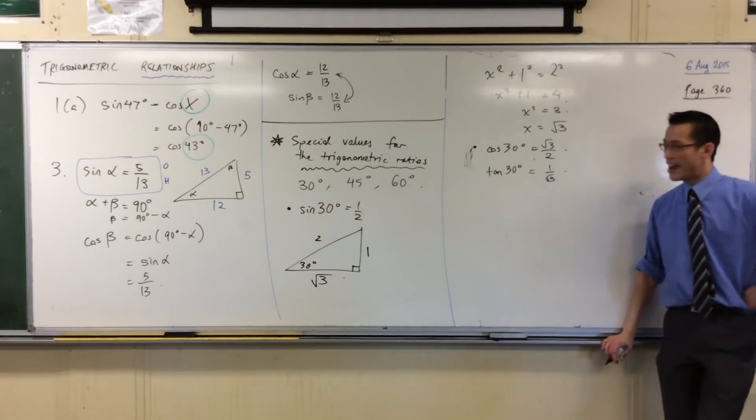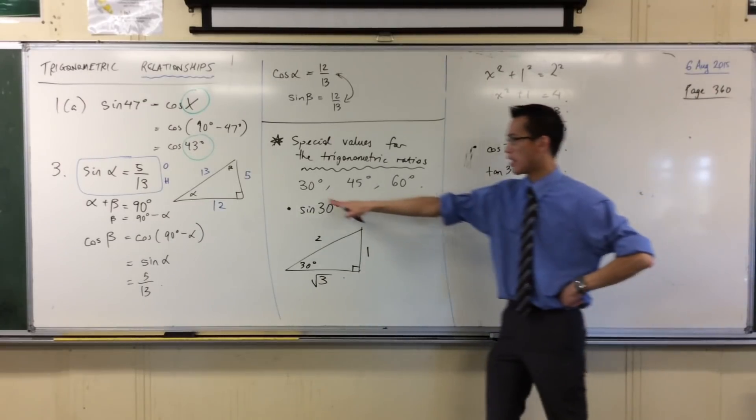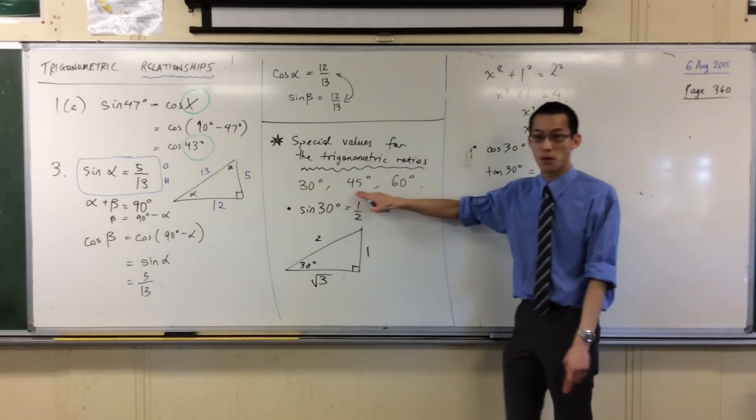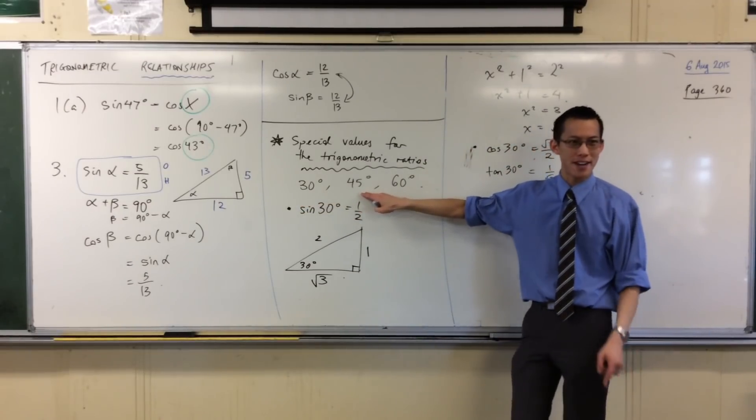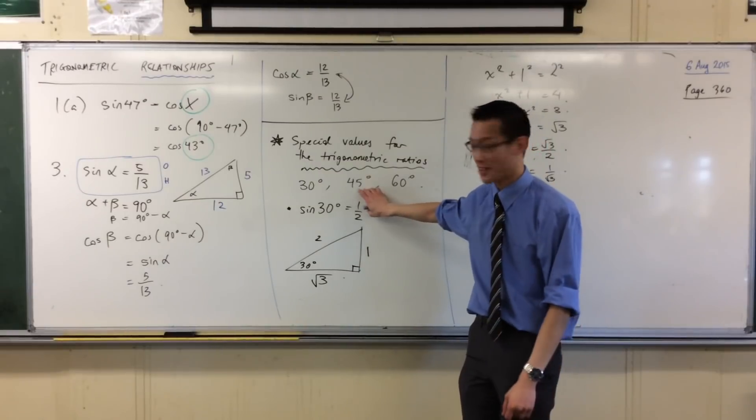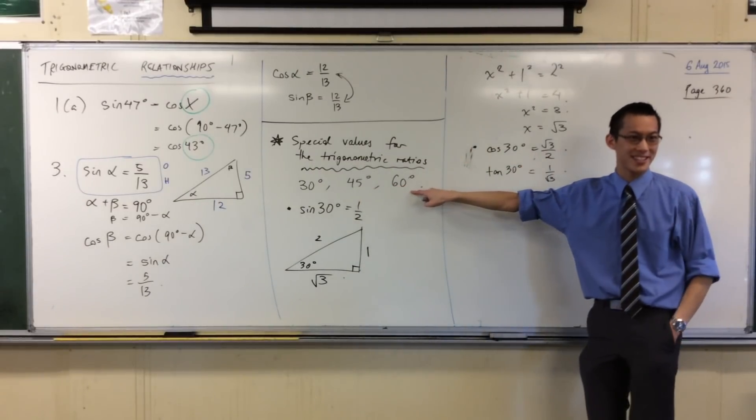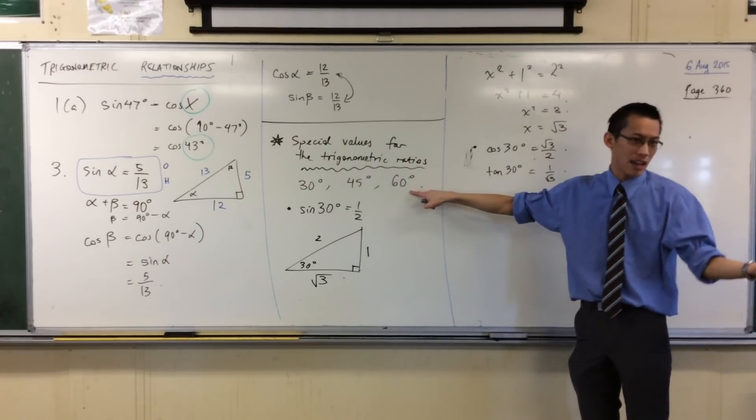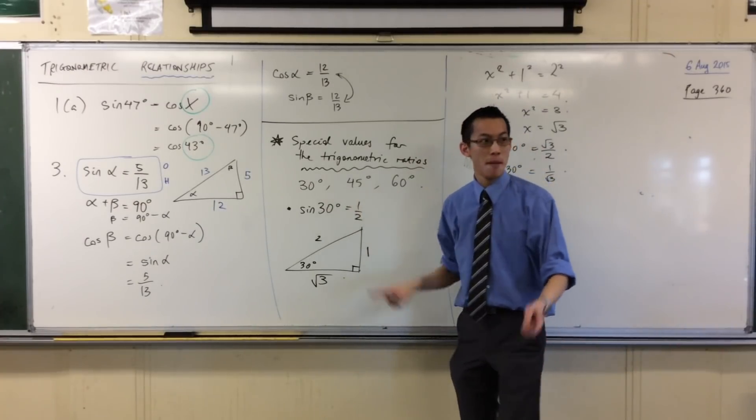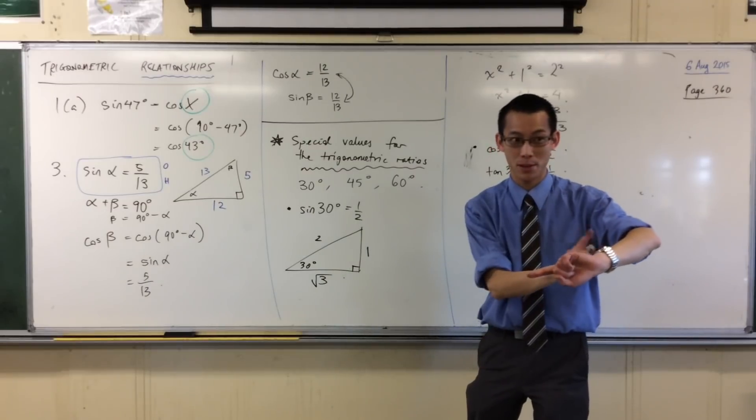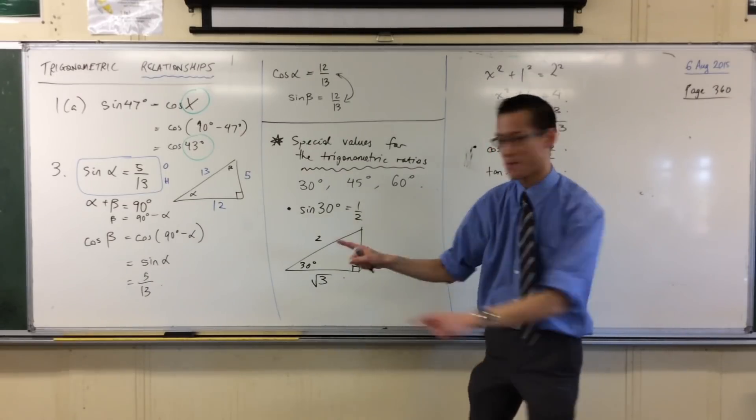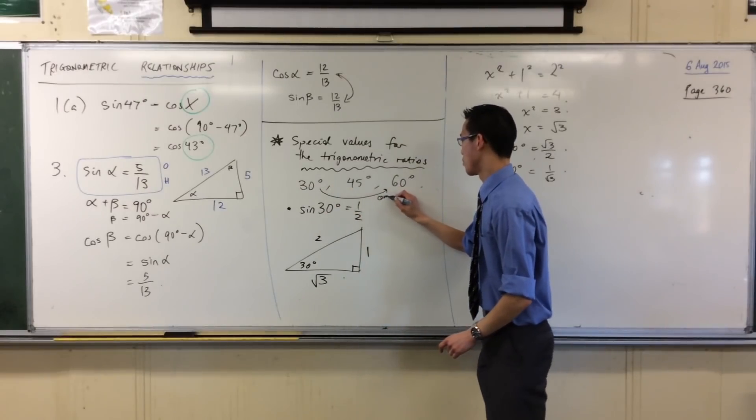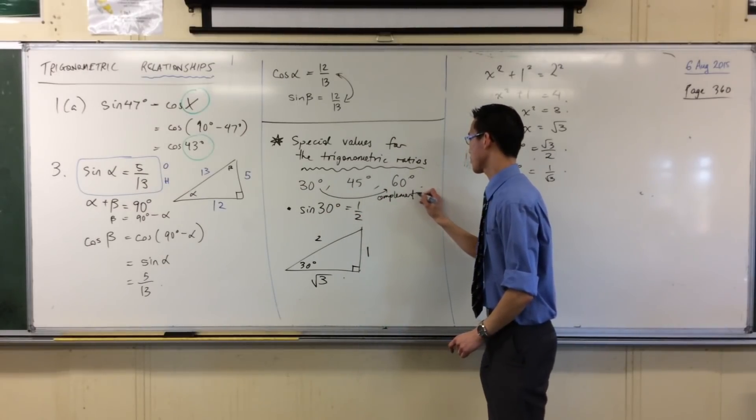Now you might think, okay, I've done 30. I've done all three ratios for 30. Seems like a logical next step to go to 45. You could go to 45, but it's not the logical next step. Can anyone see why the logical next step is 60? Because it's double the size. That's kind of a nice link between them. But more importantly, think about what we've been looking at for the last 20 minutes. They're complementary. So these guys are complements.